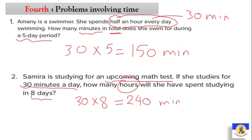Now we need to convert 240 minutes to hours. To convert minutes to hours, we divide by 60. We can cancel the zeros from both 240 and 60, giving us 24 ÷ 6. Using the multiplication table: 6 × 4 = 24, so the answer is 4 hours. Samira will have studied 4 hours in eight days.